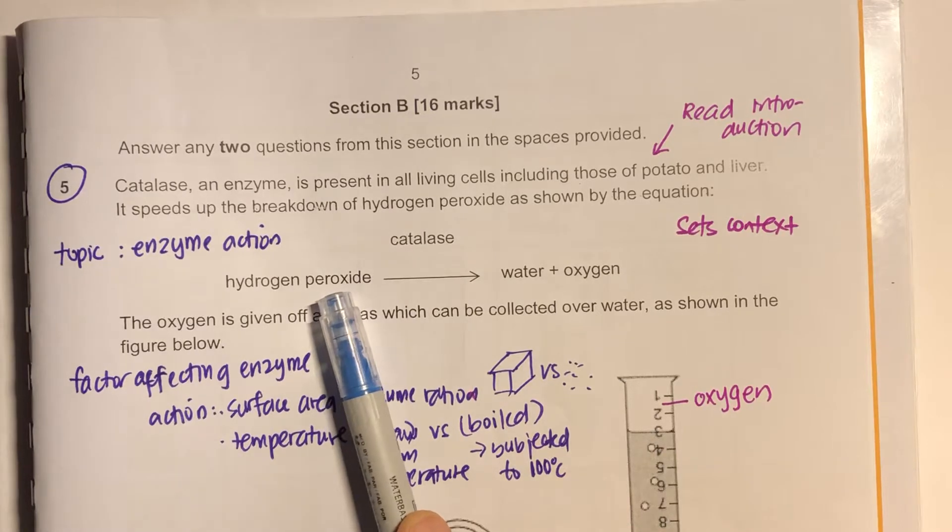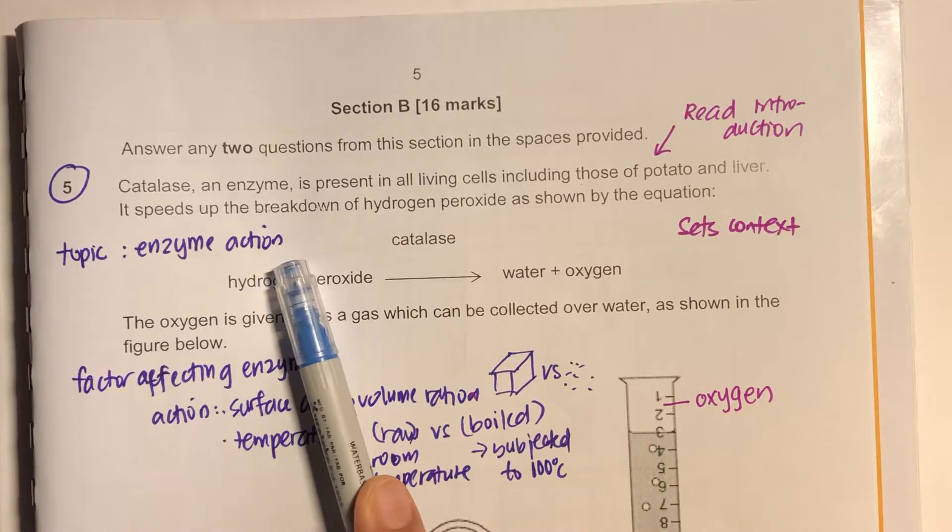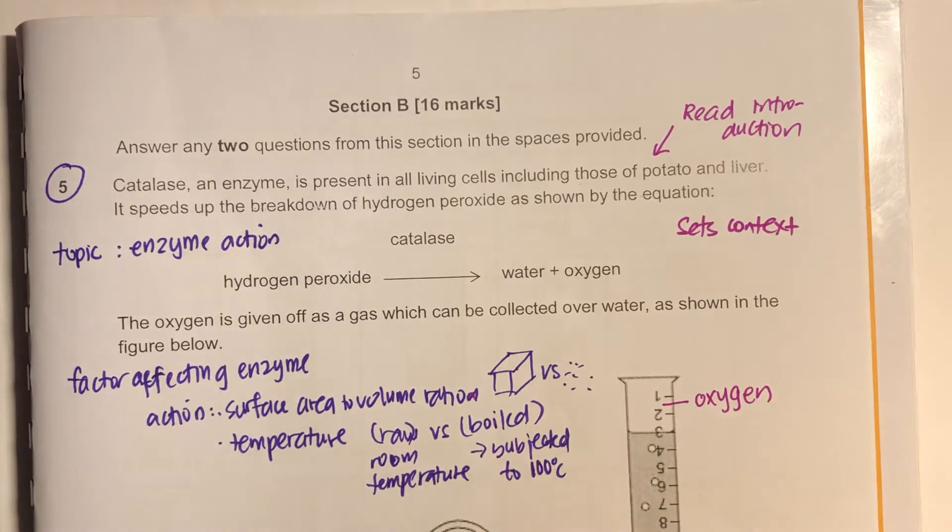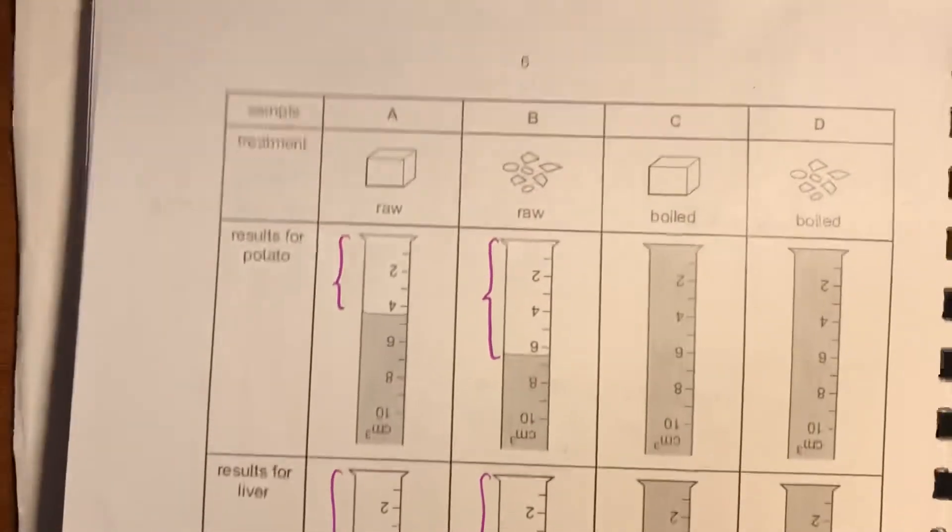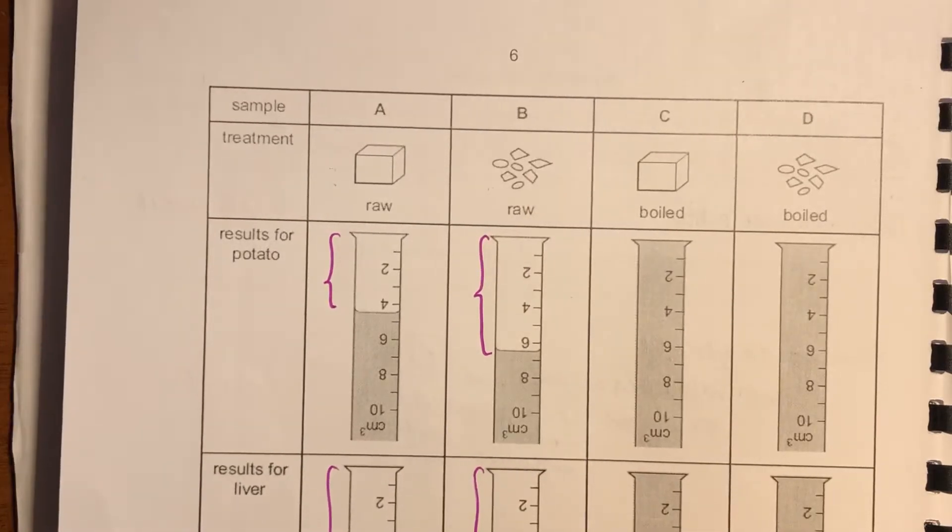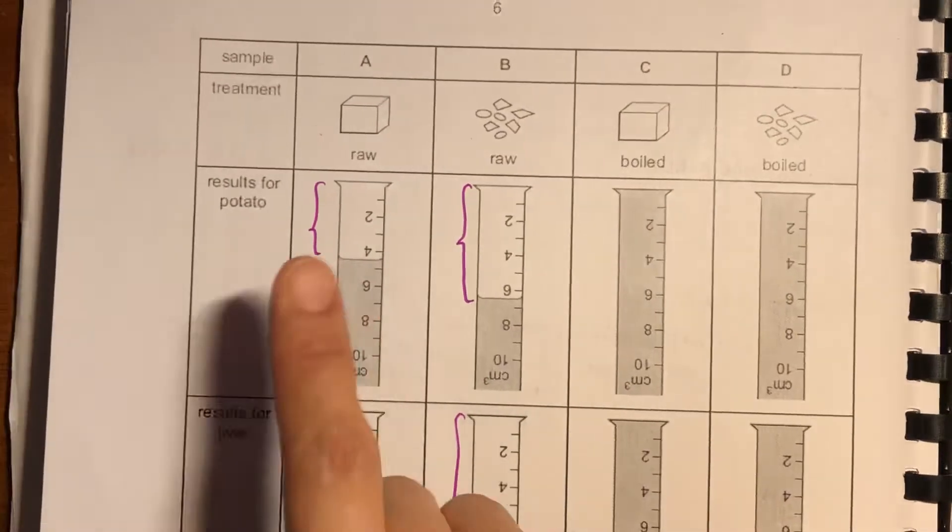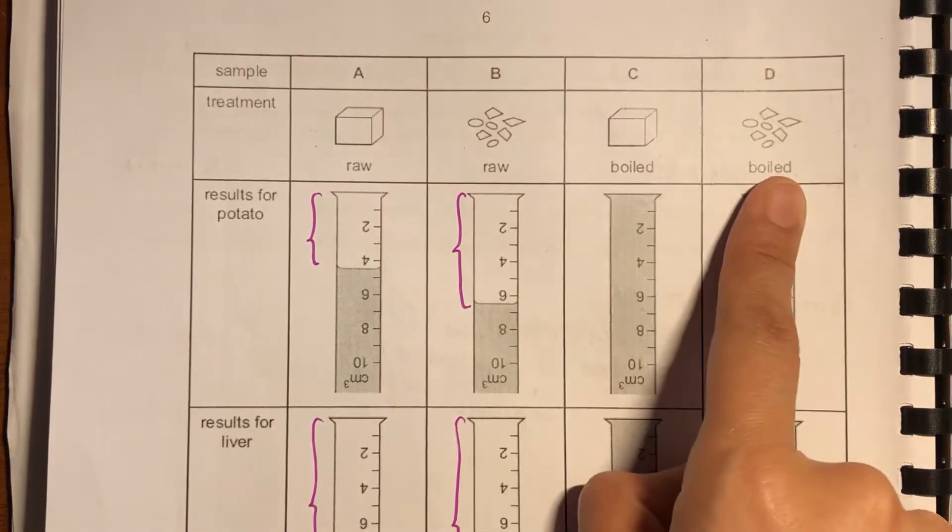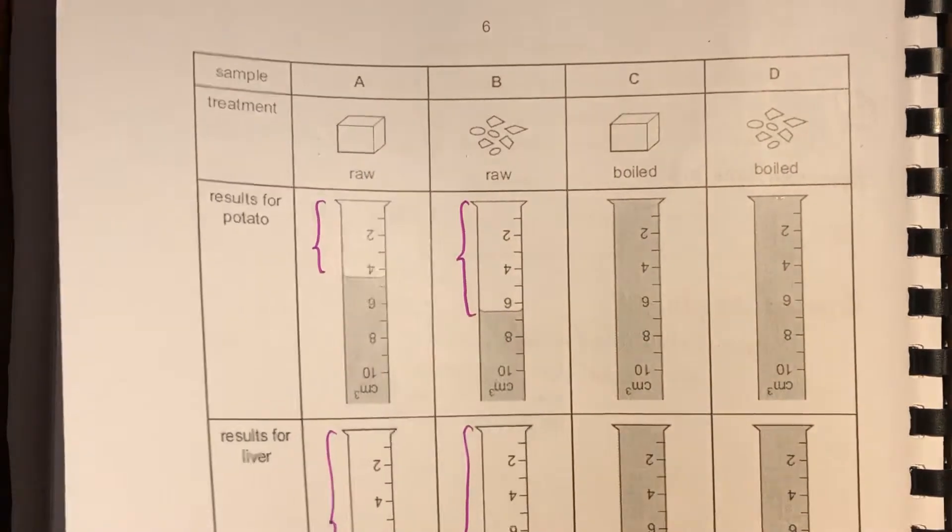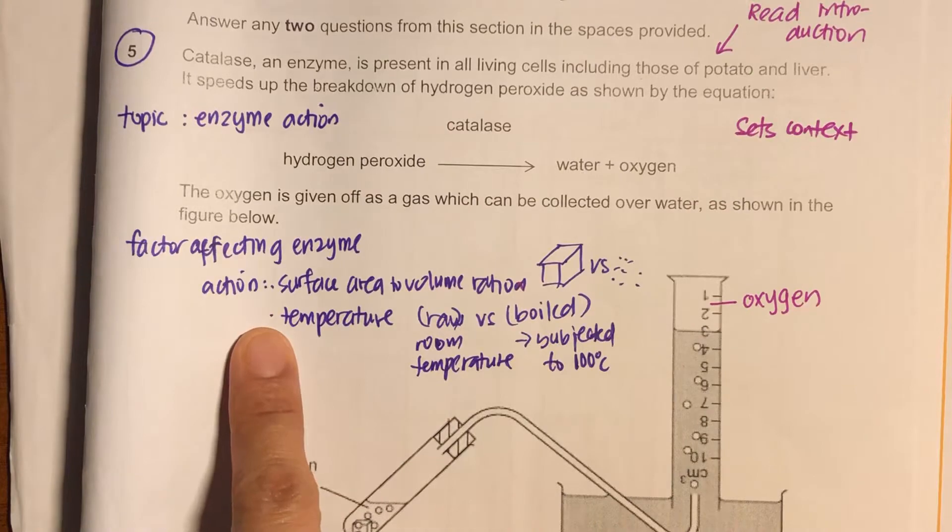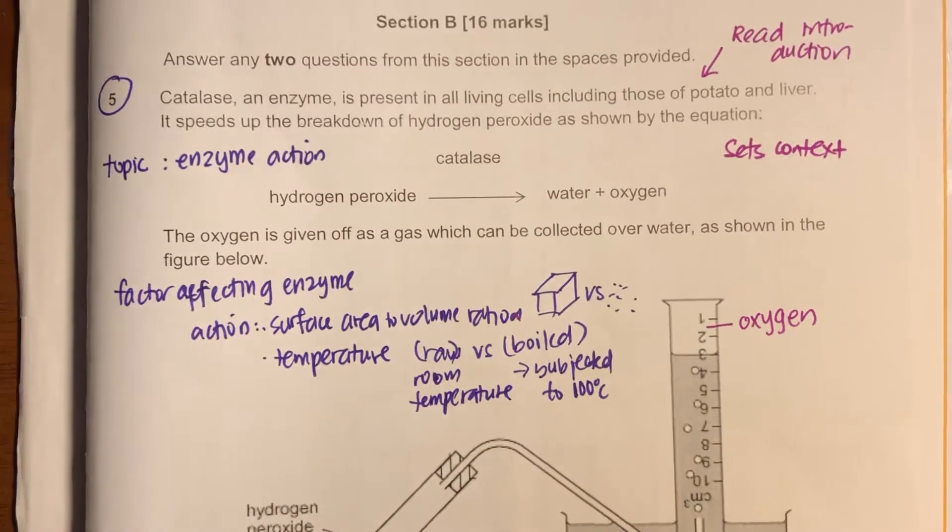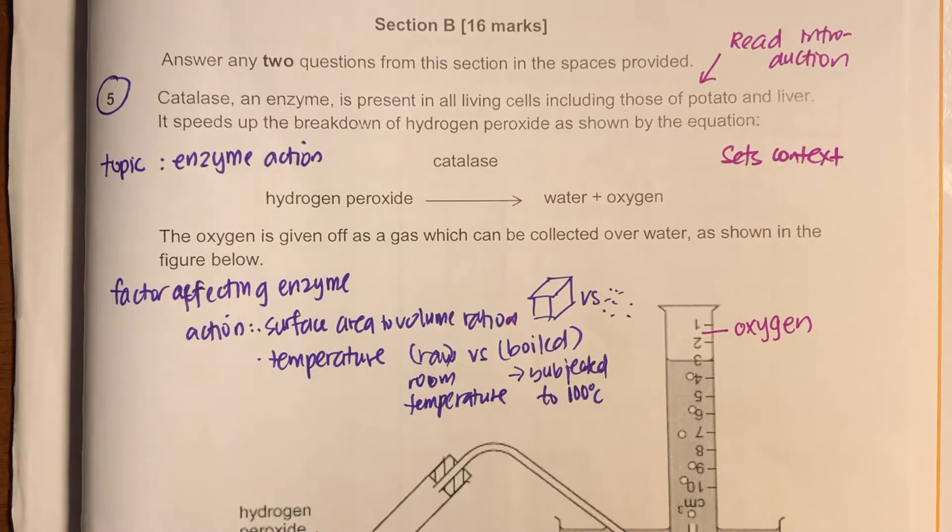So this question is about enzymes. And if you read the question further, you will analyze that there are two things that they are possibly investigating. One is the effect of temperature, and the other is the effect of surface area to volume ratio. So I have written it over here. What are the factors that are looking at? So that you can understand what this question is about.